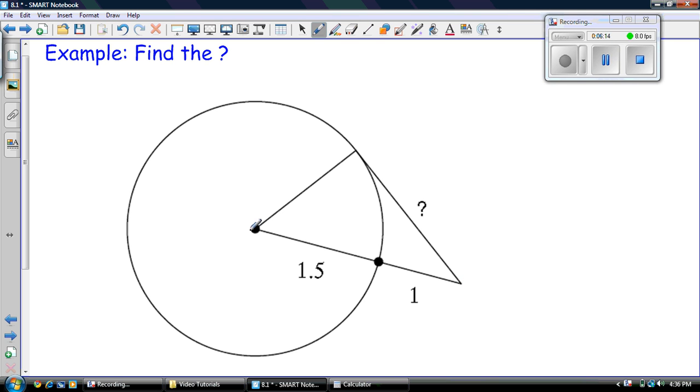So this distance here, 1.5, of course, looks familiar. It's the radius. So this is also a radius from here to here, also 1.5. So this distance, the total leg, is 2.5.